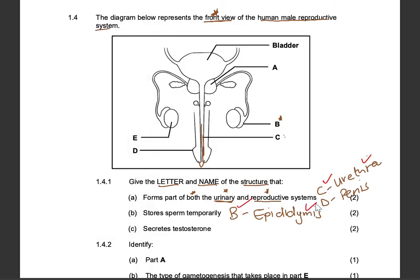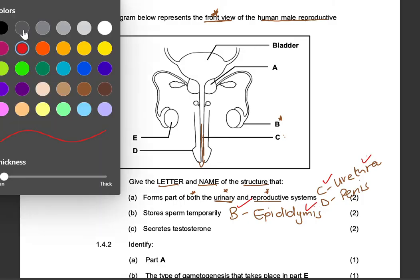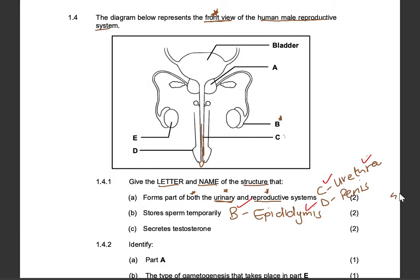As long as the spelling is correct, that should be fine. The next question asks for the letter and name of the structure that secretes the hormone testosterone. That is E — the testis.